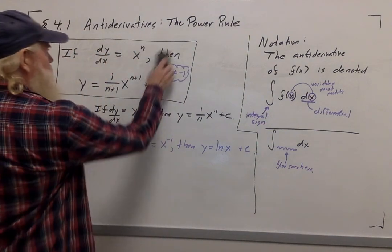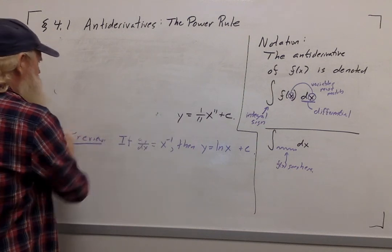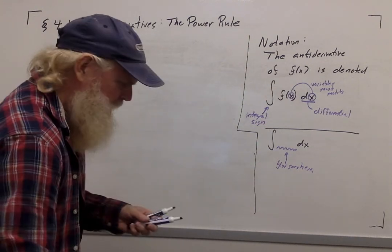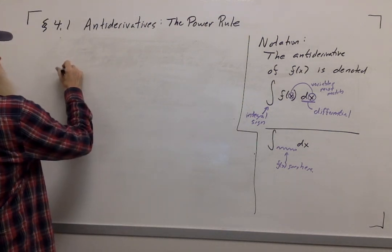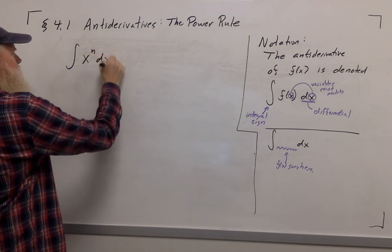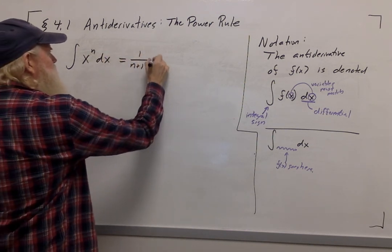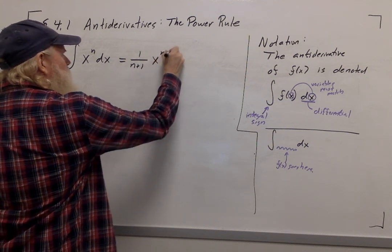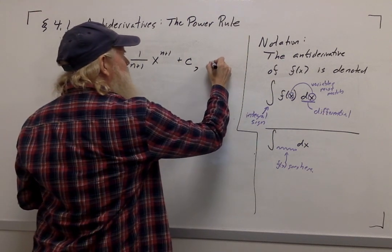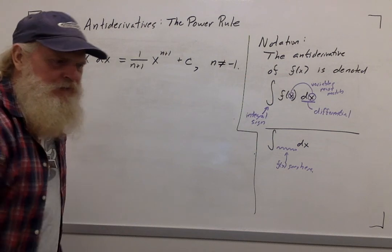So now, using that notation, we can write down the power rule in a much simpler form. Now we can say that the anti-derivative of x to the n is equal to 1 over n plus 1, x to the n plus 1 plus c, provided n is not equal to negative 1.